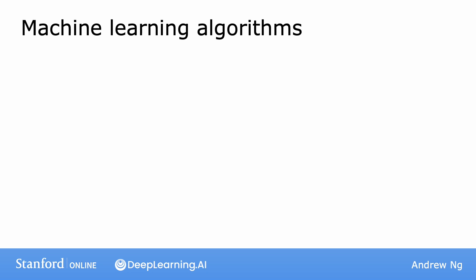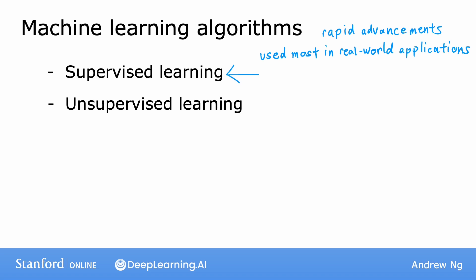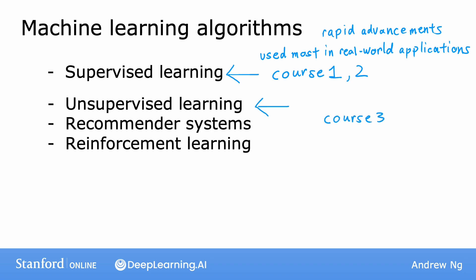In this class you'll learn about many different learning algorithms. The two main types of machine learning are supervised learning and unsupervised learning. We'll define what these terms mean more in the next couple of videos. Supervised learning is the type of machine learning used most in many real-world applications and has seen the most rapid advancement and innovation. In this specialization, which has three courses in total, the first and second courses will focus on supervised learning and the third will focus on unsupervised learning, recommender systems, and reinforcement learning.